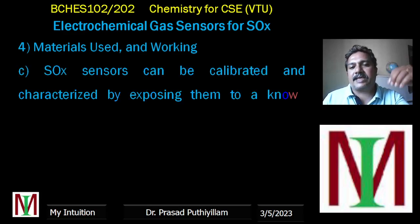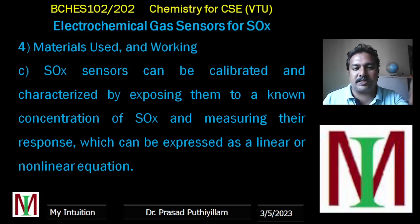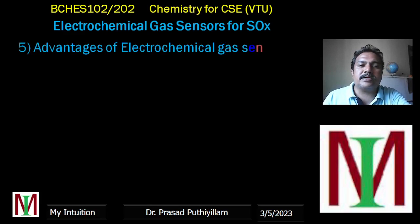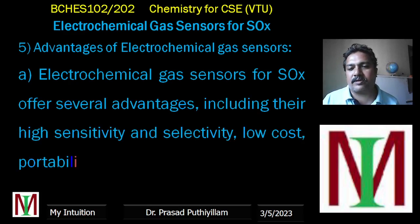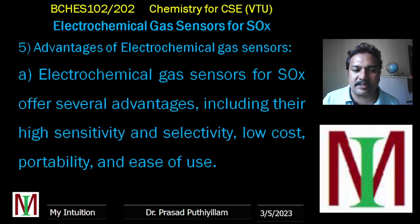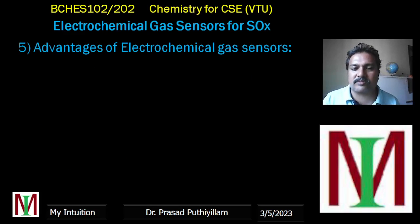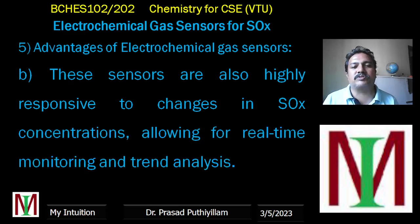The SOX sensor can be calibrated by exposing it to known concentrations of SOX and measuring its response, which can be expressed as a linear or non-linear equation. Advantages of electrochemical gas sensors for SOX include high sensitivity, high selectivity, low cost, portability, and ease of use.